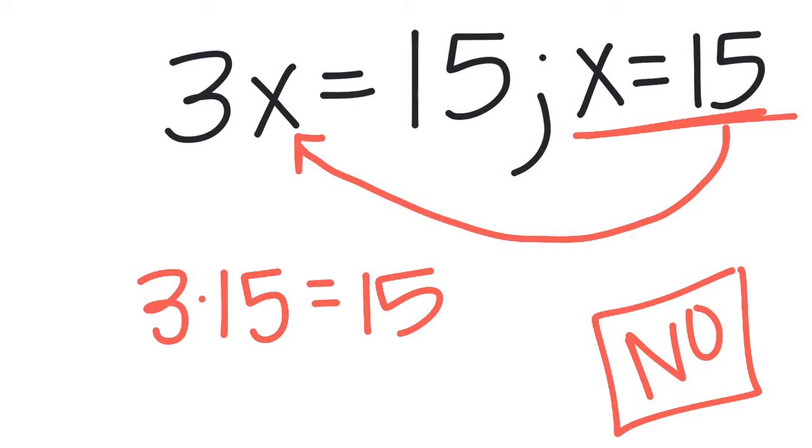If I were to go through and finish solving just to make sure, I would do 3 times 15 and get 45, and 45 and 15 do not equal each other. So again, I would show that this is not equal to each other and x equals 15 is not a value or a solution to this equation.